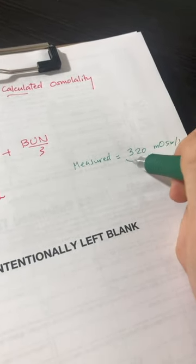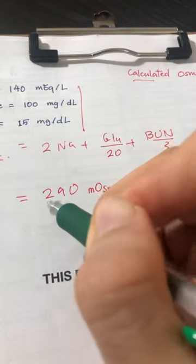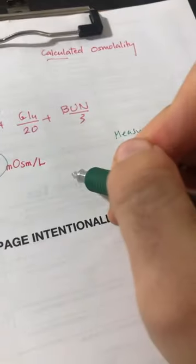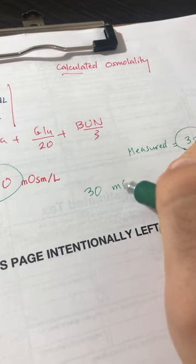Okay, now what's the difference between 320 and 290? 320 minus 290 is 30 milliosmoles per liter.